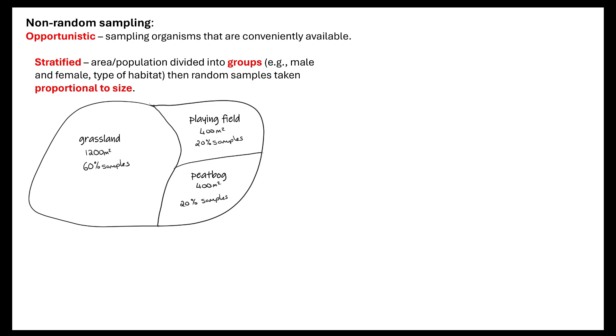Is it grassland? Is it a playing field? Is it a peat bog? And then we're going to do random samples within that area but it's proportional to the size. So if for example I've got a grassland which is 1200 meters squared, I need 60% of my samples to come from that grassland area. That should then give me a reasonable number so that I can get that proportional sample to the size of the area.